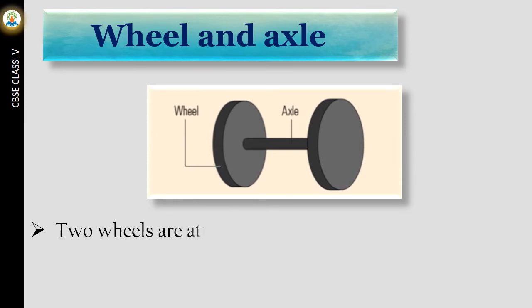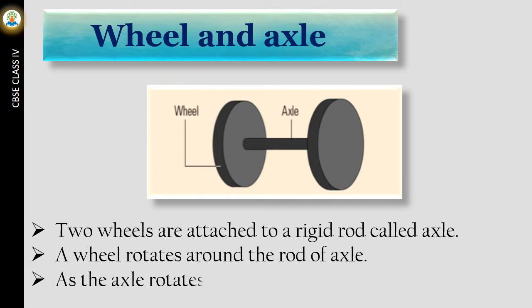Two wheels are attached to a rigid rod called axle. A wheel rotates around the rod of axle. As the axle rotates, the wheels also rotate.